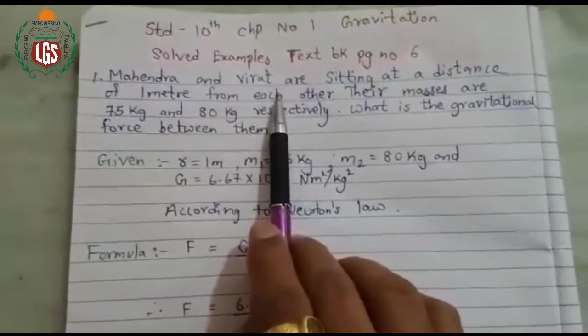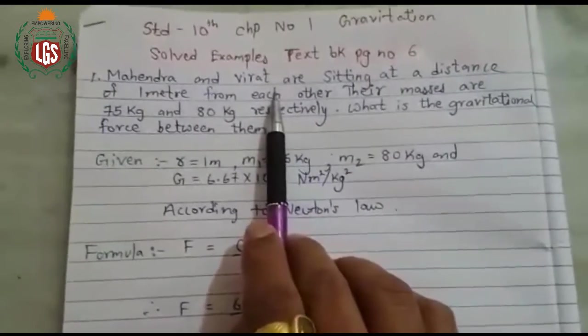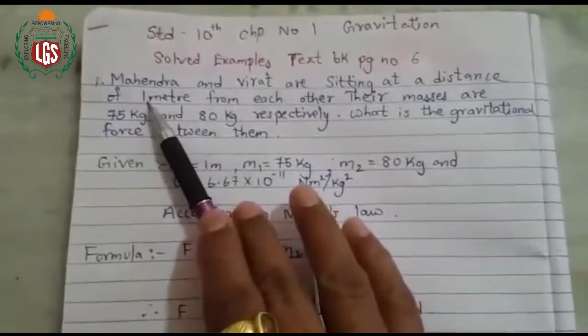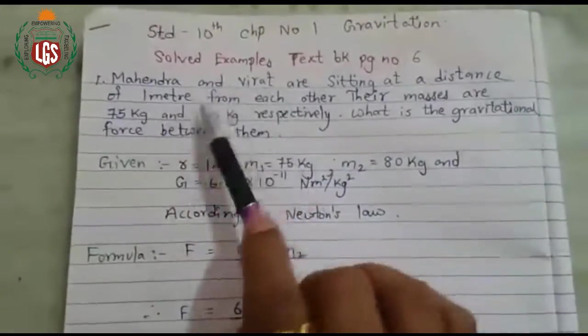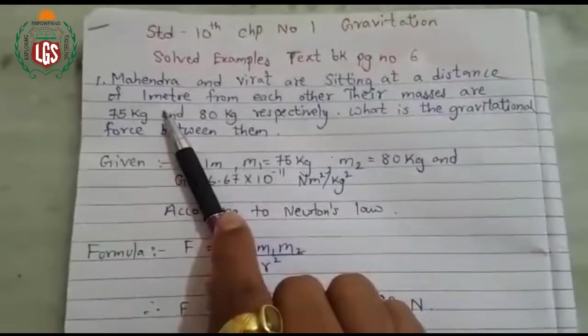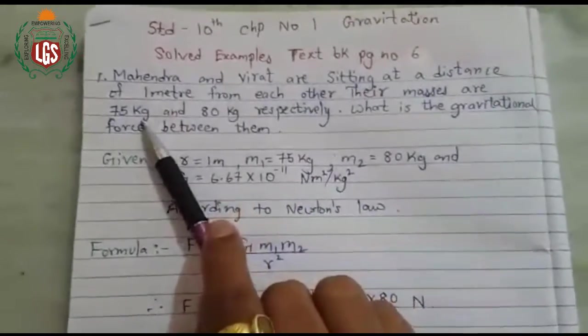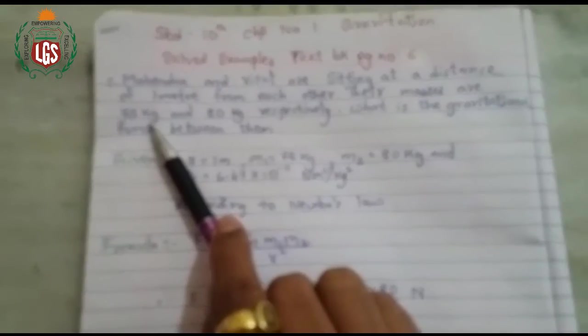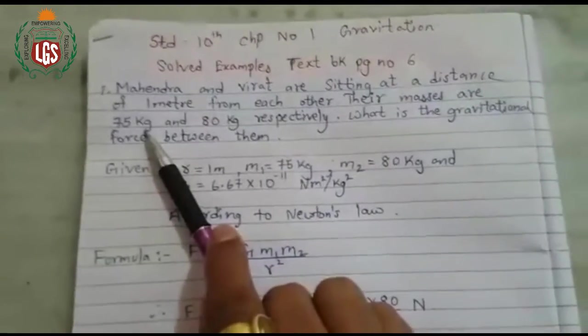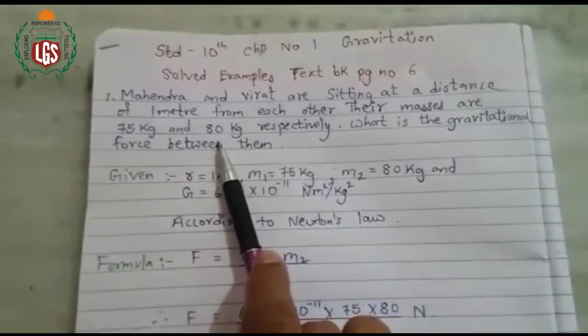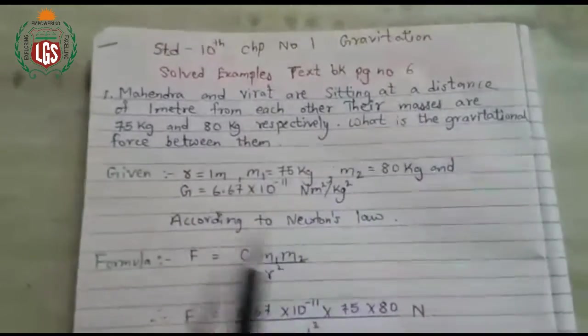Mahendra and Virat, both persons or you can consider any two objects, two bodies. One is Mahendra and the other is Virat sitting far away from each other. The distance is 1 meter. Their distance from each other is 1 meter, and the mass of Mahendra is 75 kg whereas the mass of Virat is 80 kg. So what is the gravitational force between them?